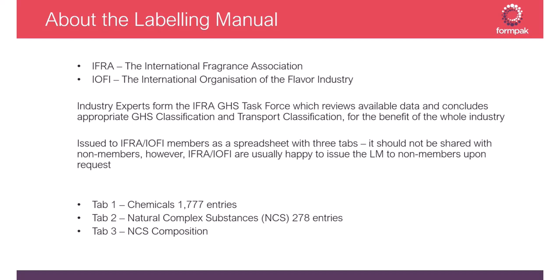The labeling manual is issued as a spreadsheet to IFRI and IOFI members and has three tabs. It's proprietary information so it shouldn't be shared with non-members. However, if you contact IFRI they're usually happy to issue the labeling manual to non-members upon request. The three tabs represent chemicals on tab one, with 1,777 entries in the 2022 issue.